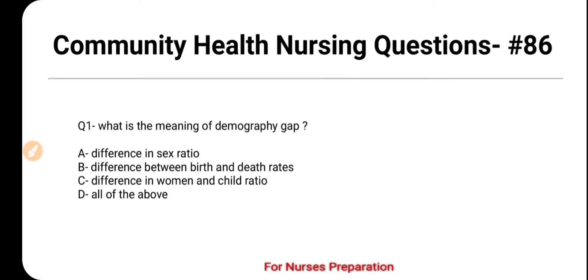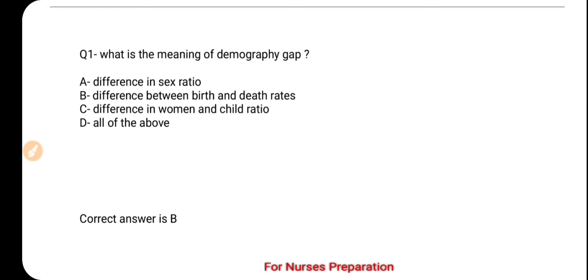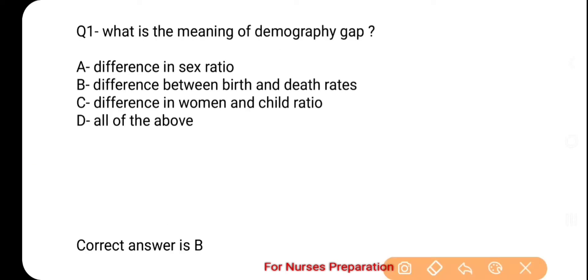And the correct option is option number B — Difference between Birth and Death Rates. The difference between Birth Rate and Death Rate is what we call the Demographic Gap.